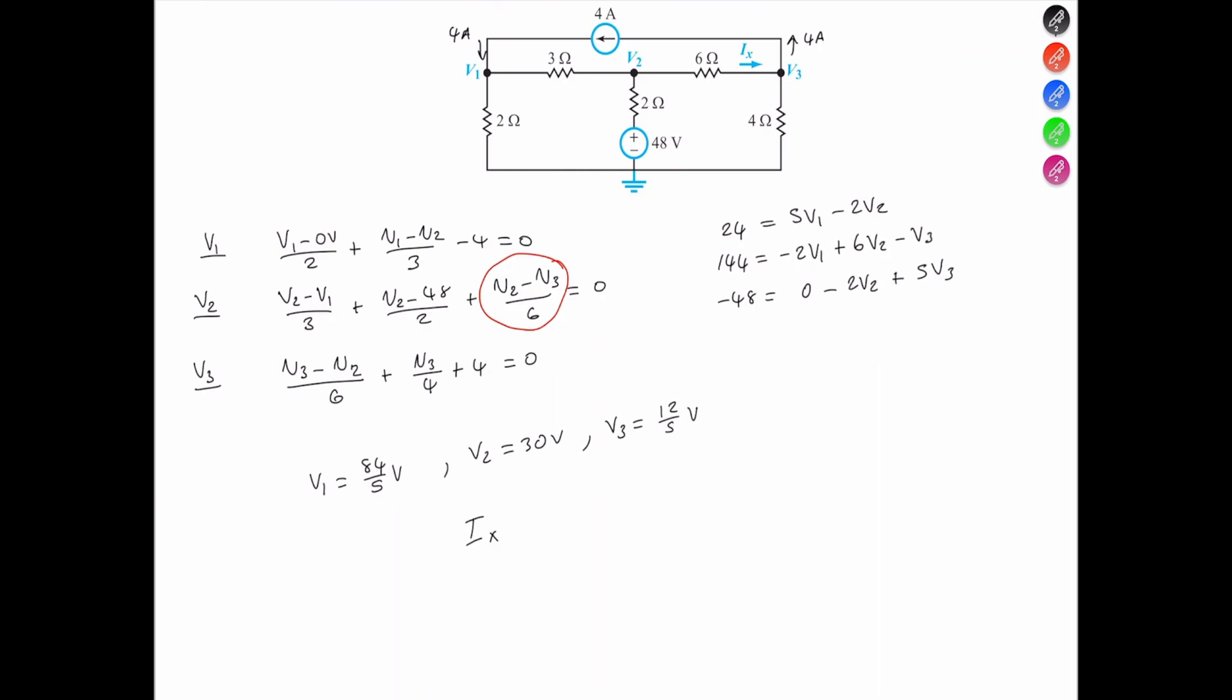So thus, Ix is equal to V2 with reference to V3, we can call that the voltage across the 6 ohms, divided by that 6 ohms, equal to 4.6 amperes, and that's it. See you in the next problem.